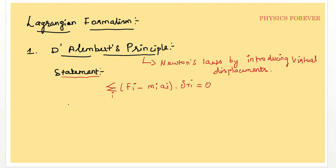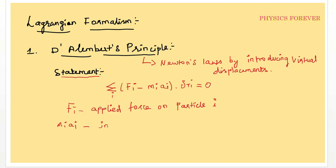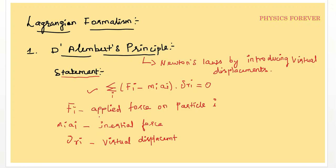Here F_i is the applied force - applied force on particle i. m_i times a_i is the inertial force. Then delta r_i is the virtual displacement. So the most important equation to remember: summation of (F_i minus m_i a_i) dot delta r_i equals zero. For a system of particles, the total virtual work of the applied force and inertial force vanishes.